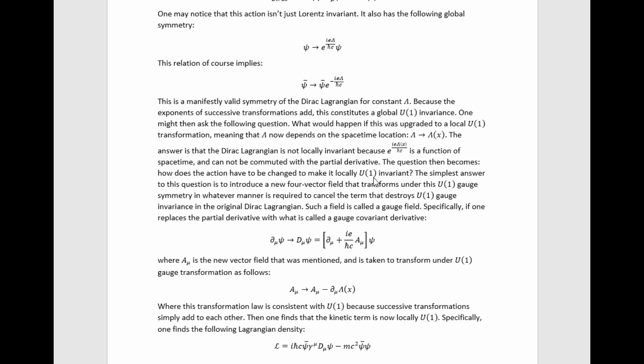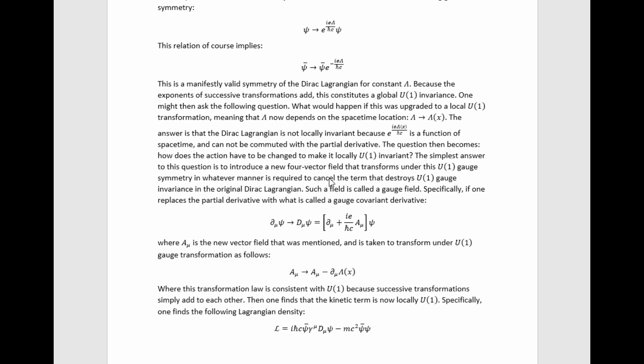The question then becomes, how does the action have to be changed to make it locally U1 invariant? The simplest answer to this question is to introduce a new four-vector field that transforms under this U1 gauge symmetry in whatever manner is required to cancel the term that destroys U1 gauge invariance in the original Dirac Lagrangian. So if we plug this in, this derivative catches on it, and we have to apply the product rule to this factor multiplying the psi field there, and so we get a term that represents a variation of the Lagrangian under this transformation. So the idea is just to add a gauge field in whose transformation under U1 is such that it also causes a new term to appear, but one that cancels the invariance term of this modified action with the A mu in it. It's actually quite a clever prescription. You'll see just how clever it is in a minute.